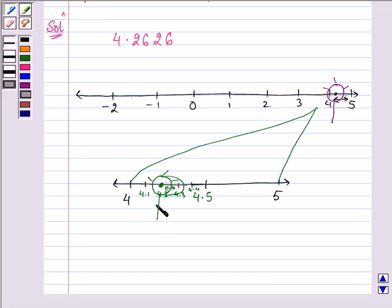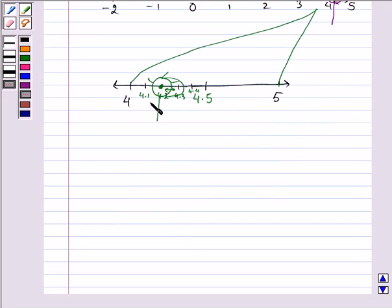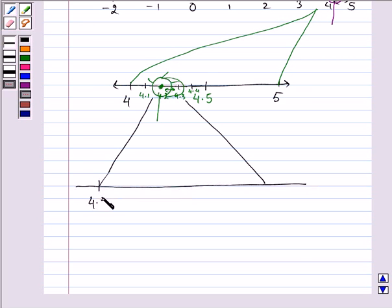So that means it will result into another number line. Let us draw that number line. So this point is 4.2 and this point is 4.3.